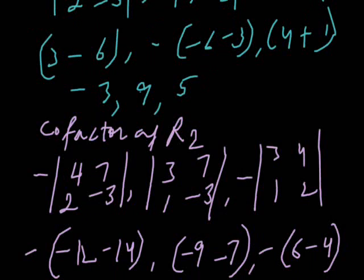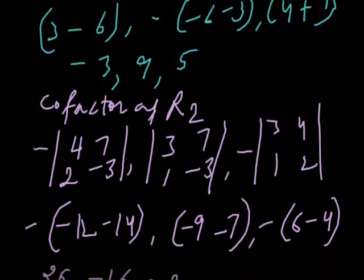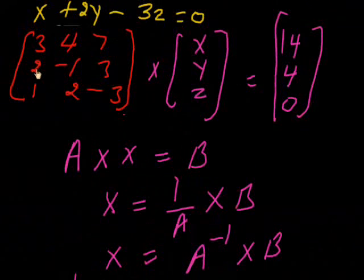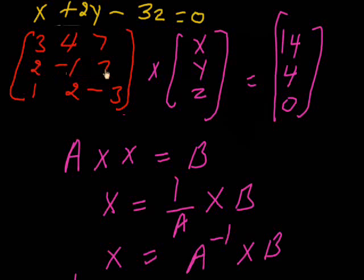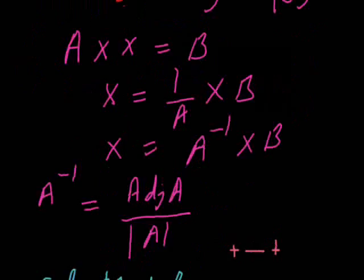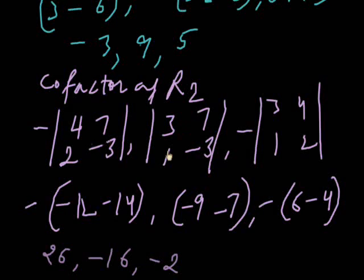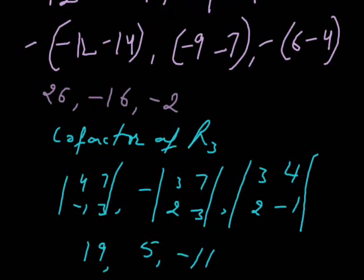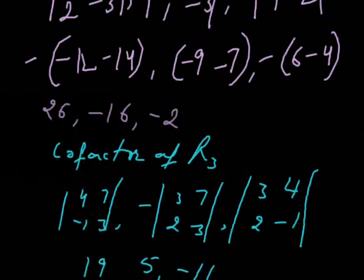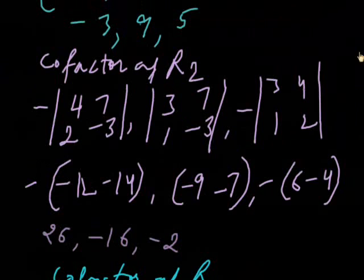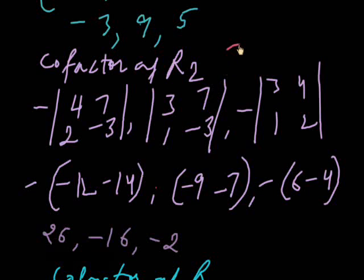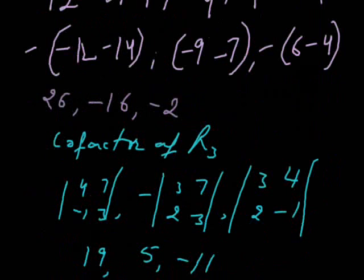Like this, we will calculate cofactors of R2. For row 2, we leave each element's column and row to find the 2x2 submatrix. I am calculating here. And like this we will also find cofactors of R3. In the second row the sign pattern is minus, plus, minus, and in the third row it is plus, minus, plus.